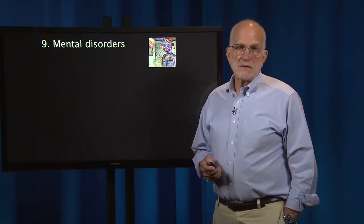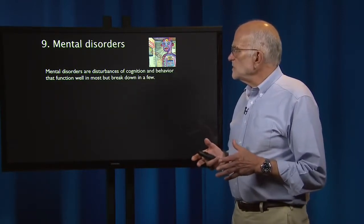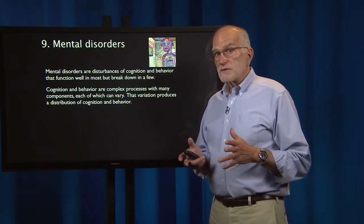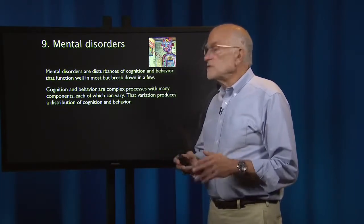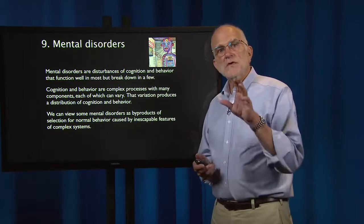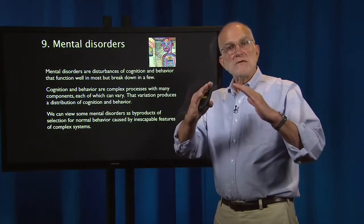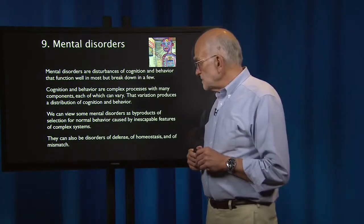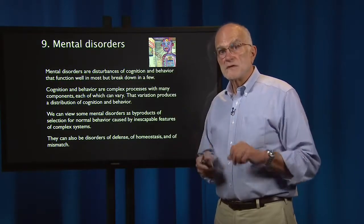There are also evolutionary insights into mental disorders. Probably the most important one is that mental disorders are disturbances of cognition and behavior that function well in most but break down in a few. Cognition and behavior are complex processes influenced by both genetic and developmental events, with many components that can vary. That variation produces a distribution — normal behavior at the center, and mental disorders as the tails. They can also be disorders of defense, of homeostasis, and of mismatch.